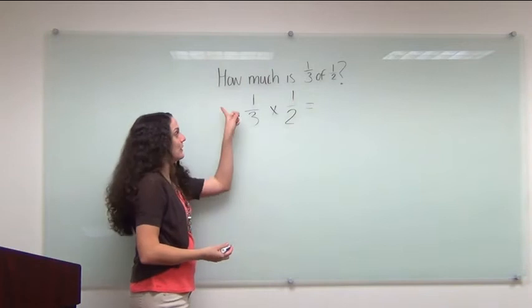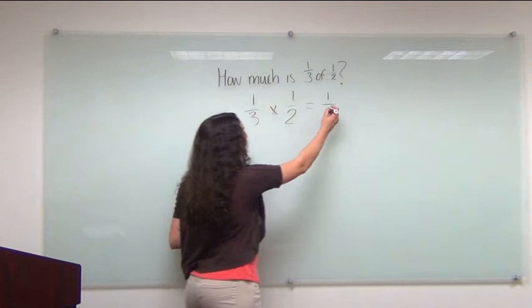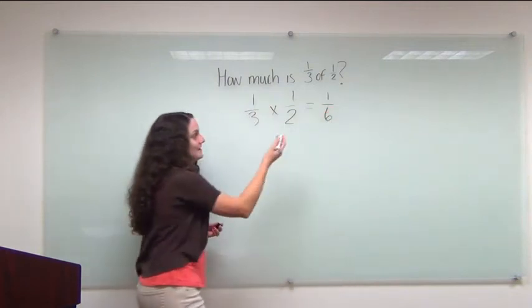So I'm multiplying fractions, multiplying straight across. One times one is one. Three times two is six. So my answer is one-sixth.